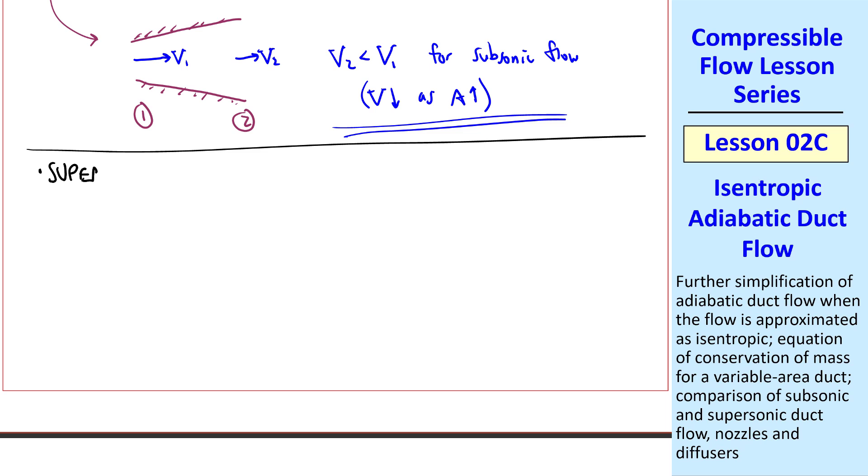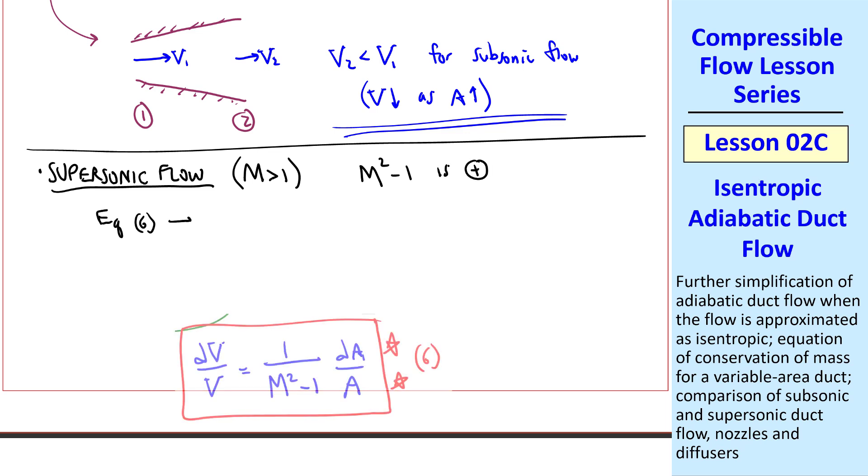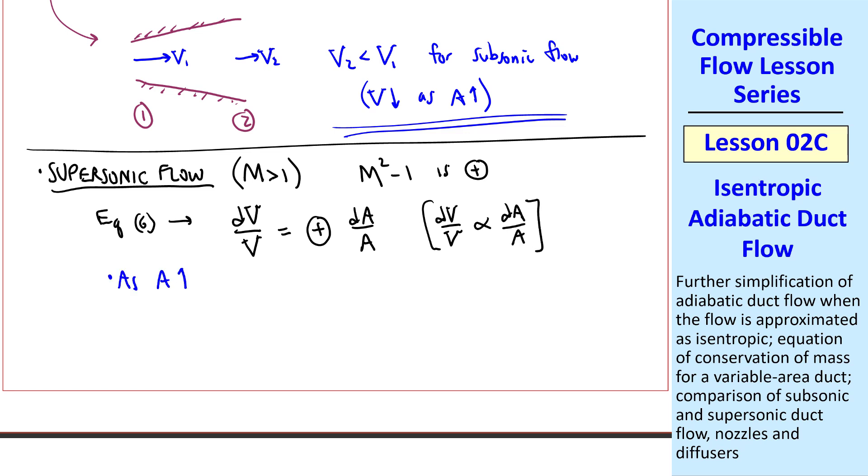Now consider supersonic flow, Mach number greater than 1. Then the term M squared minus 1 is positive. In equation 6, then, the same kind of analysis yields that dV over V is some positive number times dA over A, where dV over V is proportional to dA over A. So considering a diverging duct again, as A goes up, dA is positive. Therefore, dV is also positive. In other words, V goes up.